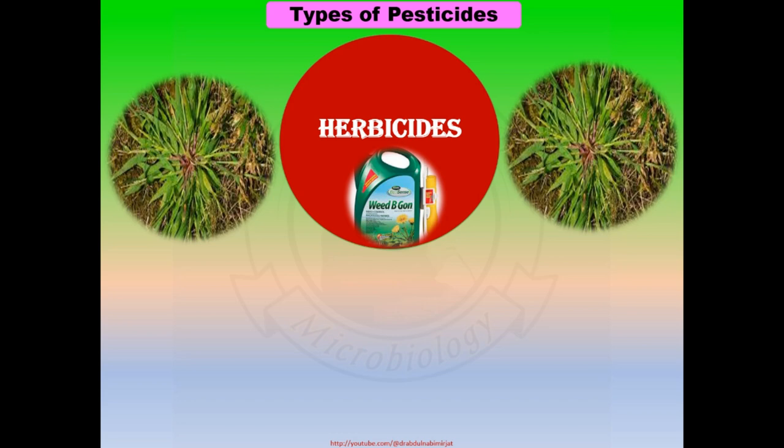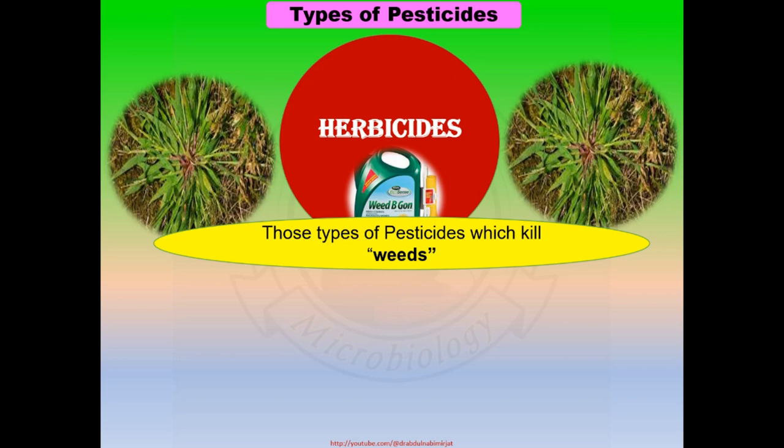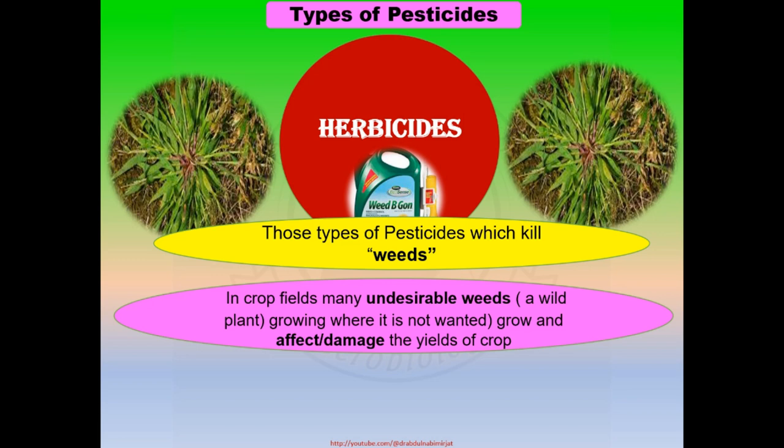Herbicides are the types of pesticides which kill weeds. These are chemicals used to kill weed plants. What are weeds and why do we want to remove or kill these types of plants? In crop fields, many undesirable weeds — wild plants growing where they are not wanted or desired — grow and damage the yields of crops.